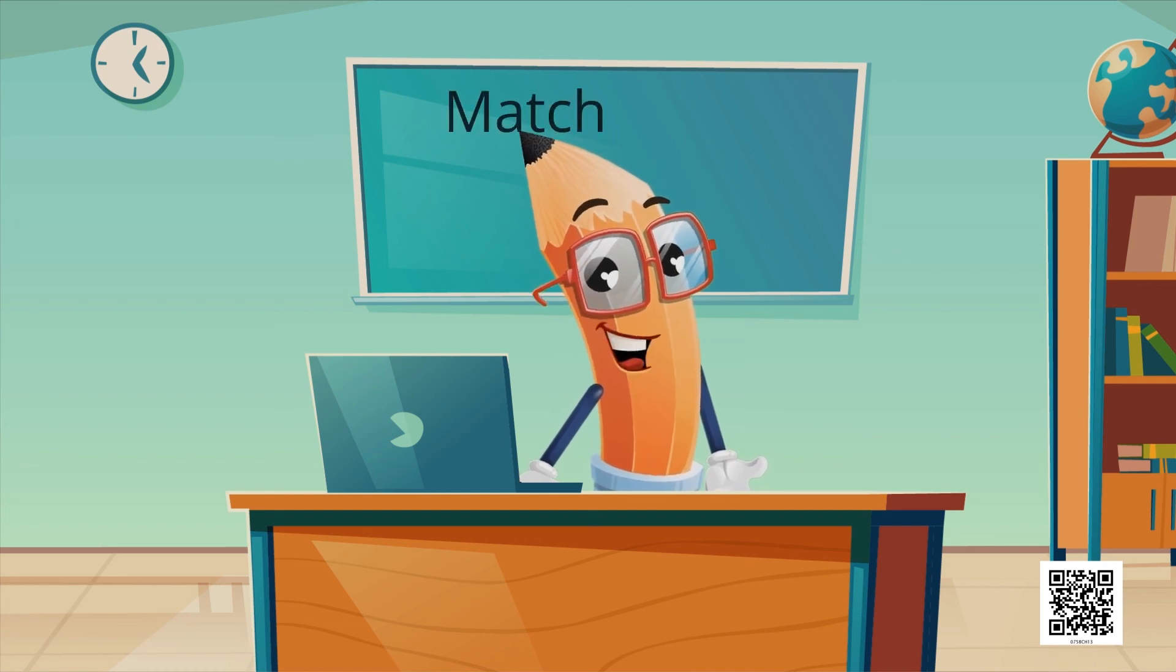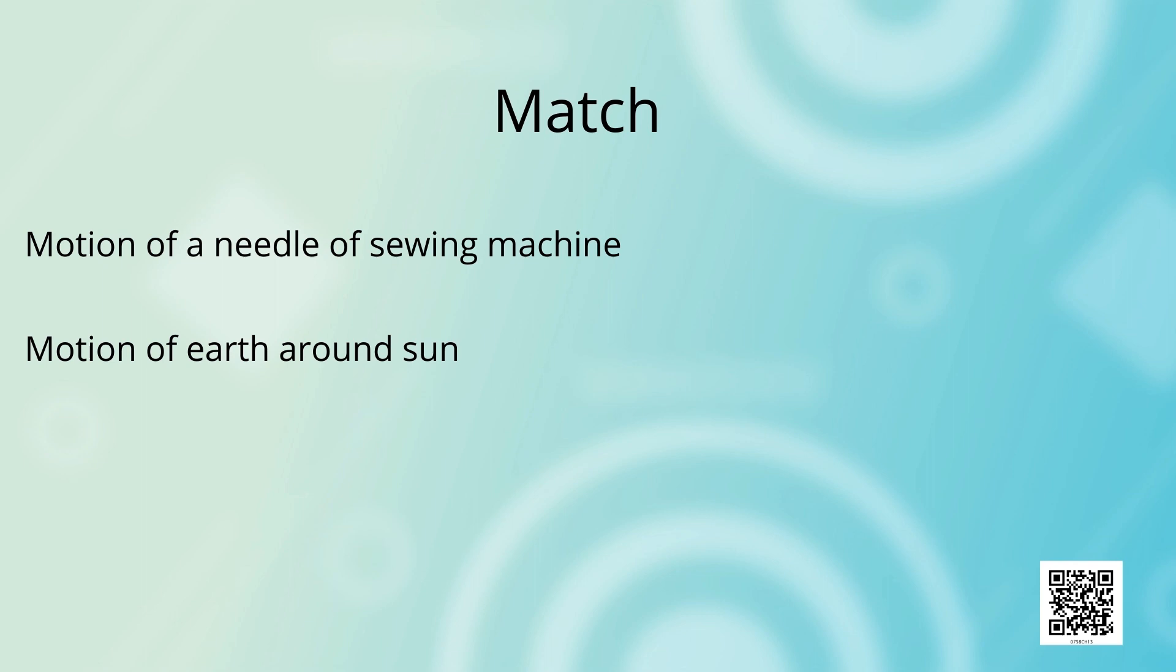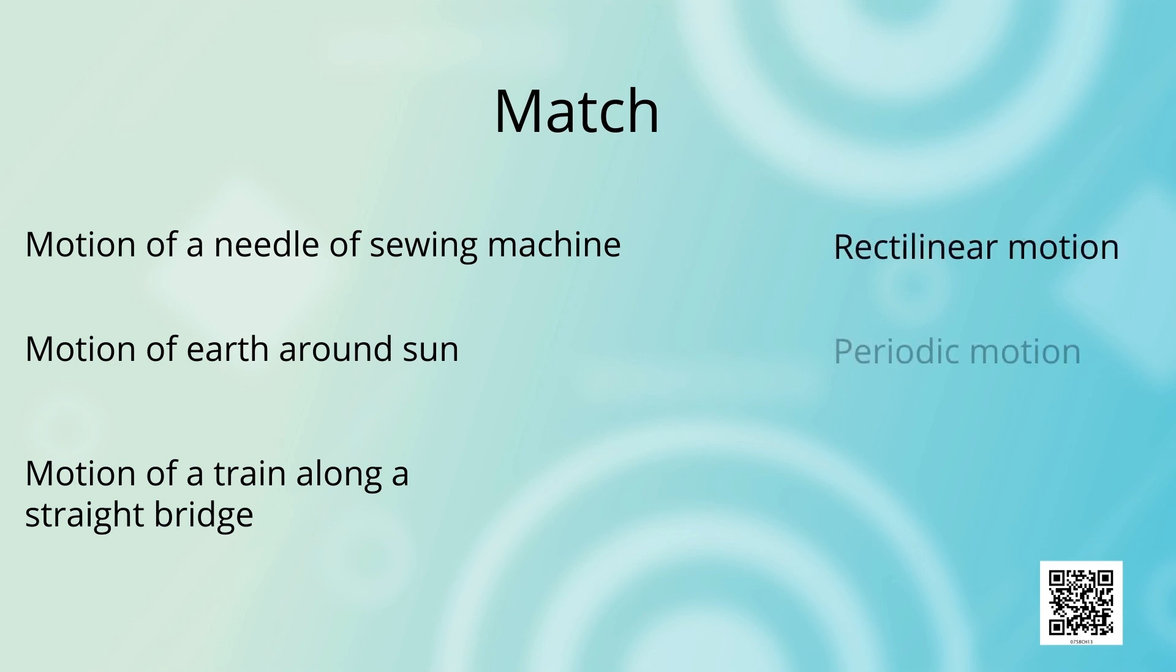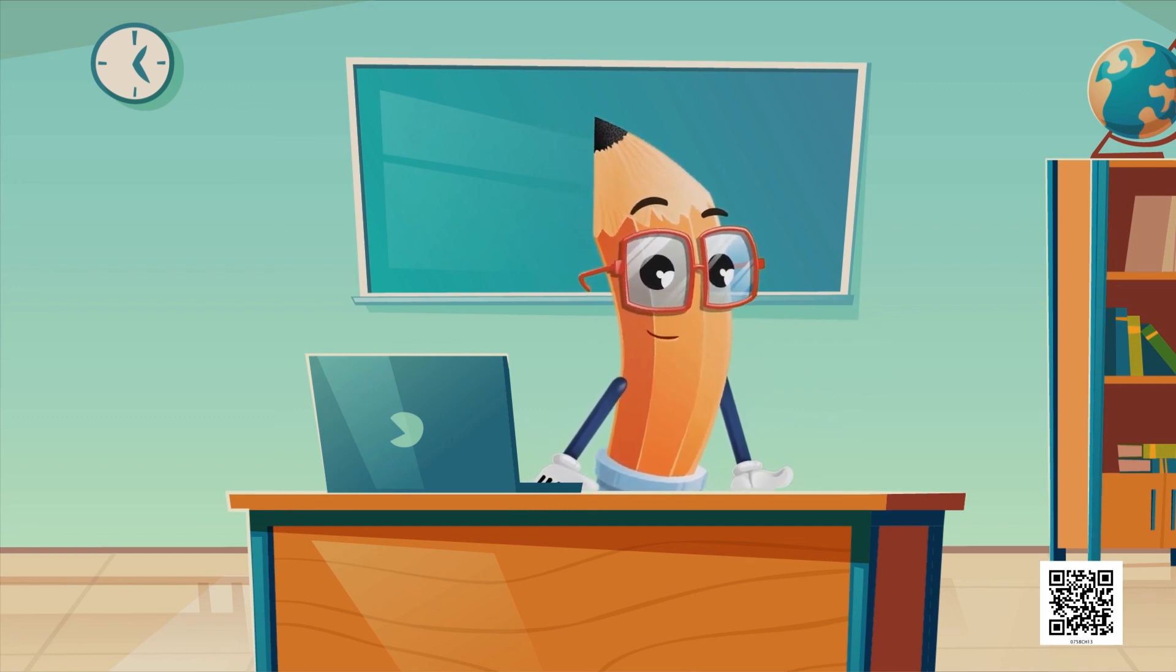So dear students, now let us match these events with the type of motion. First, motion of a needle of a sewing machine. Motion of the Earth around sun. Motion of a train along a straight bridge. Types of motion are rectilinear motion, periodic motion, and circular motion. Motion of a needle of a sewing machine shows periodic motion. Motion of the Earth around the sun is circular motion. And motion of a train along a straight path is a rectilinear motion.